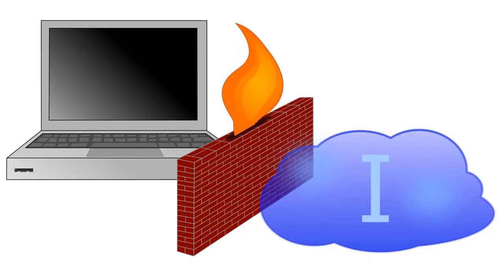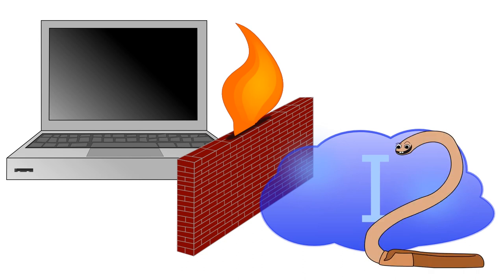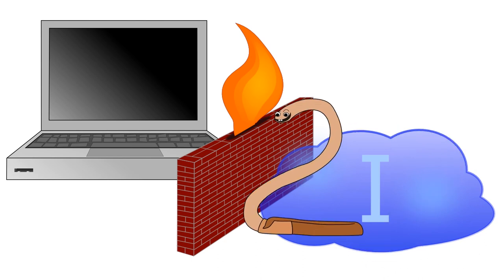Another security measure that helps computers resist worms is the use of firewalls. A firewall is a tool that controls the flow of information between your computer and other network devices. In this illustration, we see a firewall between a computer and a cloud representing the internet. The firewall will prevent unrequested internet traffic, like worms, from accessing your computer. It's a good idea to always run a firewall on your computer.